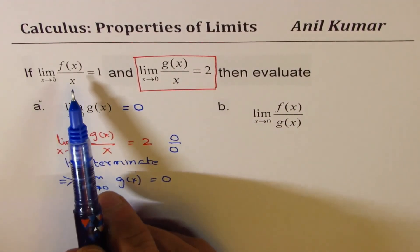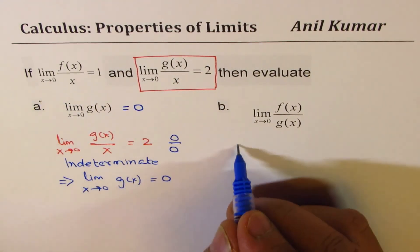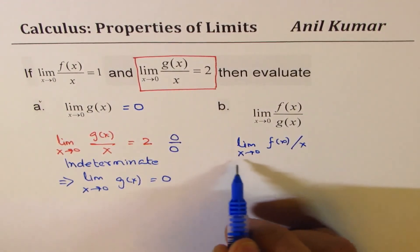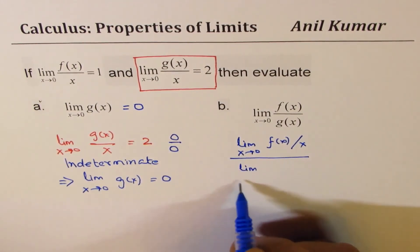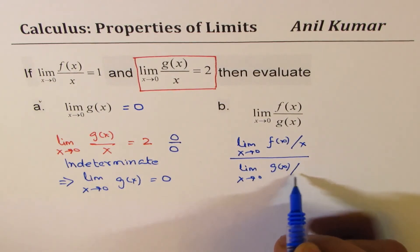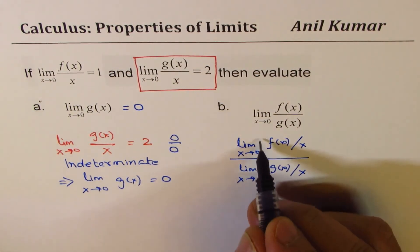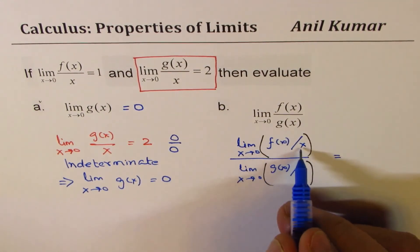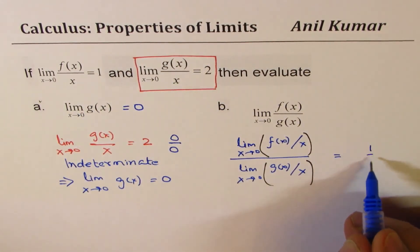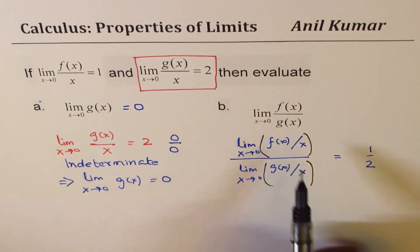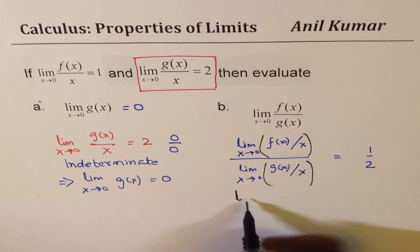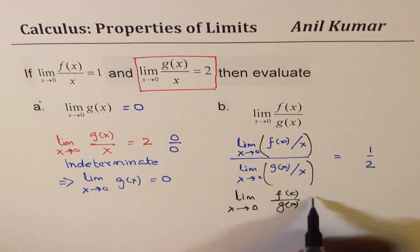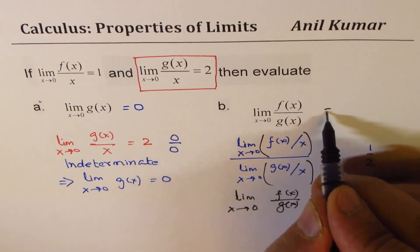For the second limit, we can get it from the ratio of the two given limits: limit x approaches 0 for f(x)/x, divided by limit x approaches 0 for g(x)/x. We know these two limits — f(x)/x is 1 and g(x)/x is 2 — so that ratio is 1 over 2. Once we cancel x from numerator and denominator, we are left with limit x approaches 0 for f(x) over g(x), which equals one half.